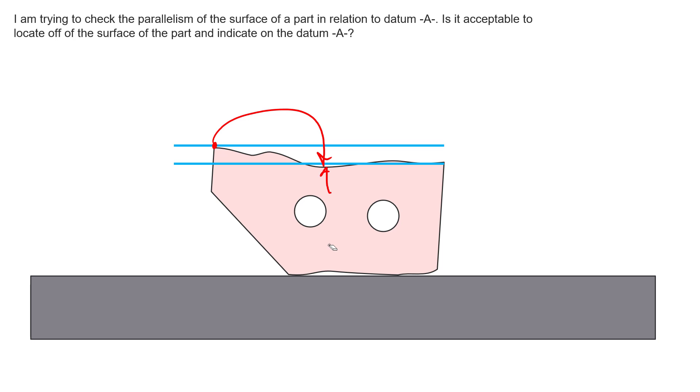So again, just showing you a couple scenarios here where if you did deviate from what the feature control frame was telling us as far as inspection criteria, being that we should simulate datum feature A on a granite table and then indicate off of the tolerance surface, if we deviate from that, we will get incorrect results.